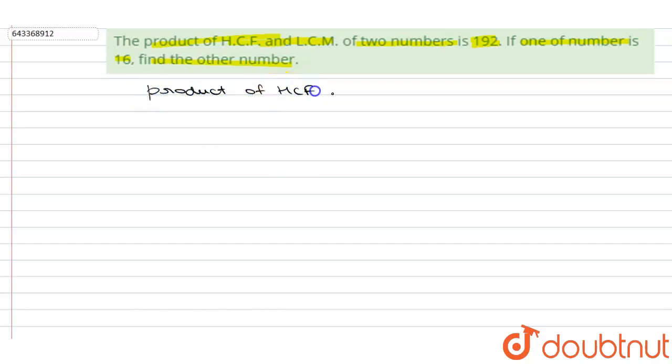of two numbers is given as 192, and one of the number is 16. And we have to find the other number. We know the relation that